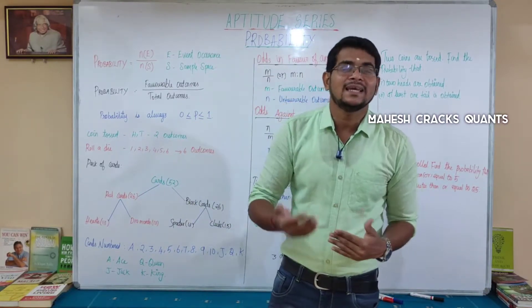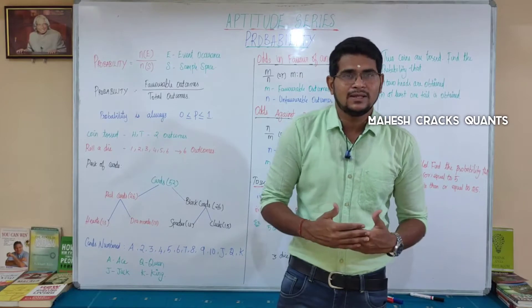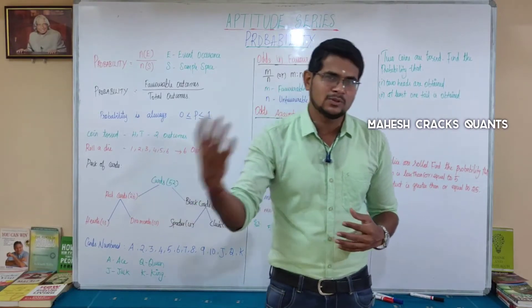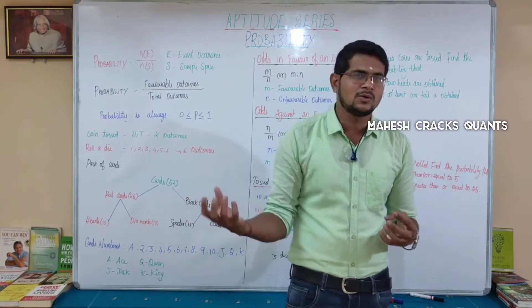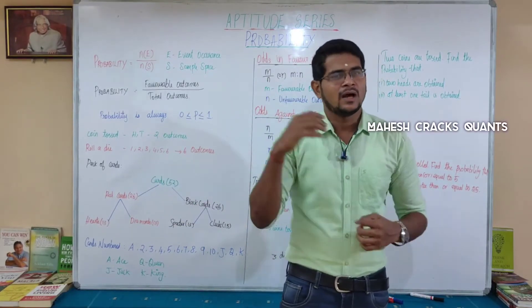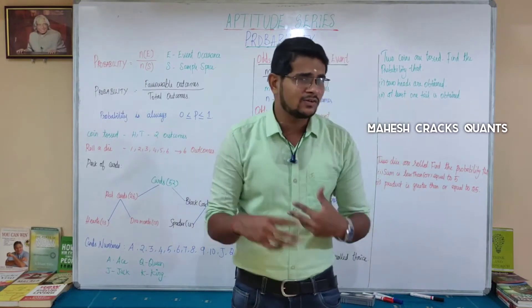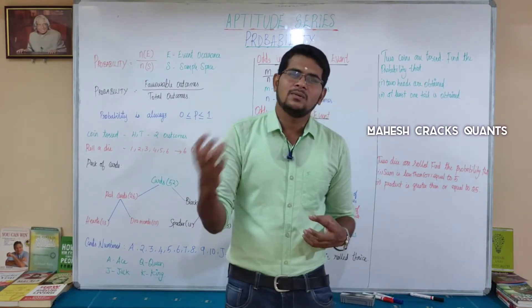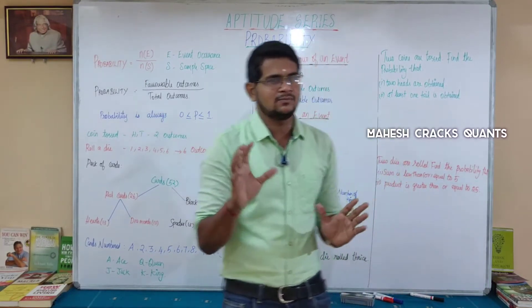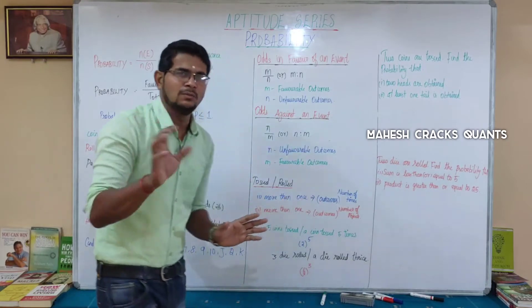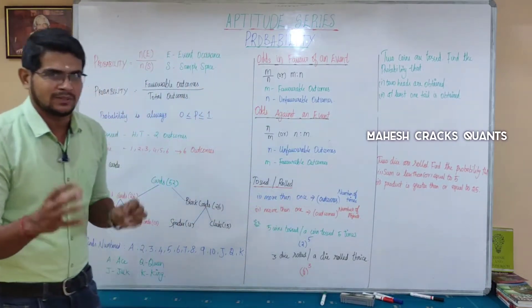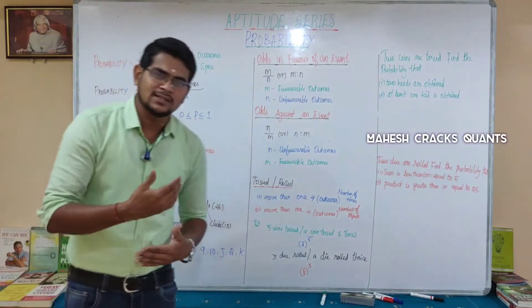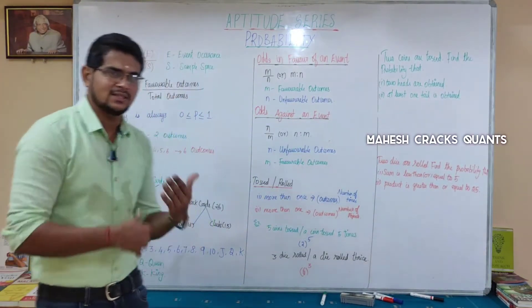If you are favorable, the bus stand is the total outcome. So 20 by 50 equals 2 by 5 — that's the probability. If you understand that concept, you can understand probability.